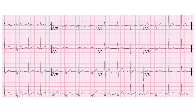The next thing we look at in the ECG is the QT interval. The QT interval is counted from the beginning of the Q wave till the end of the T wave. The normal QT interval is usually 400 to 440 milliseconds.